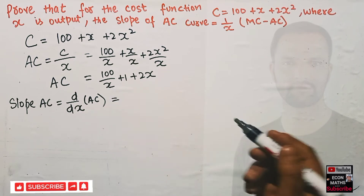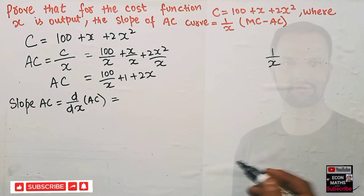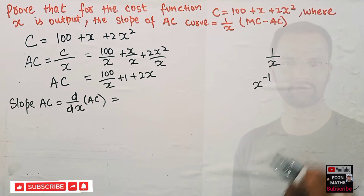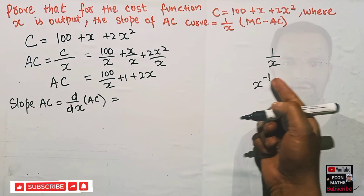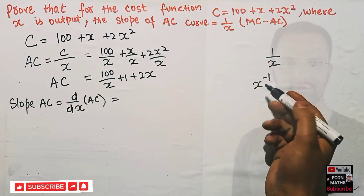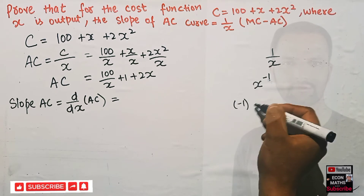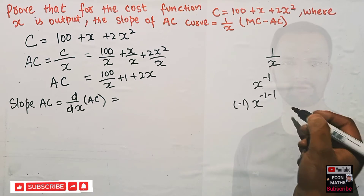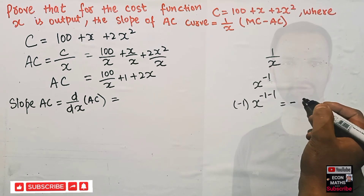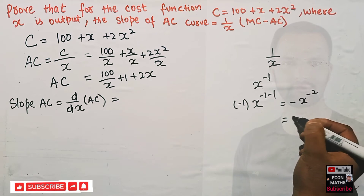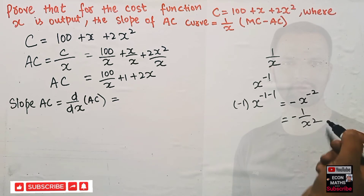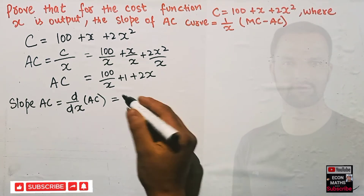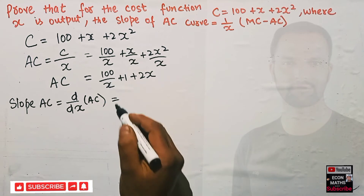Let's find the derivative of 100/x. Transposing x to the numerator it becomes x to the power of minus 1. Using the power function rule, the exponent minus 1 becomes the coefficient, and the exponent is subtracted by 1, giving us minus x to the power minus 2, which can be written as minus 1/x².